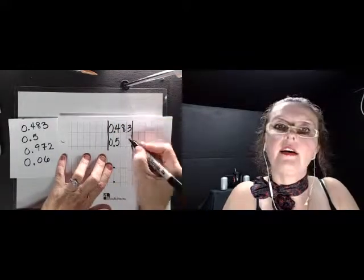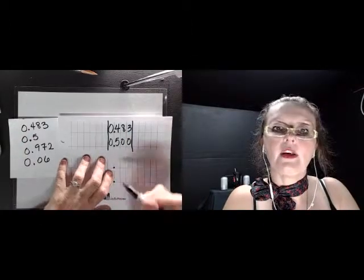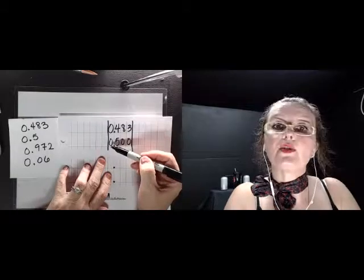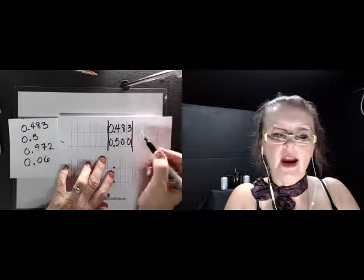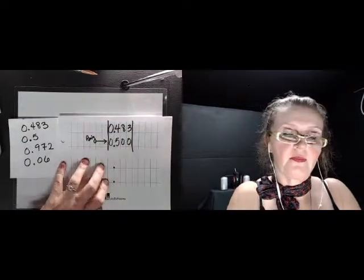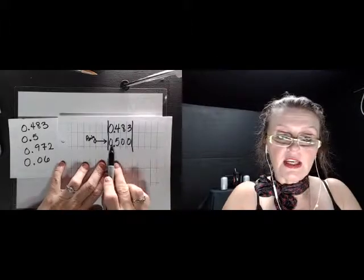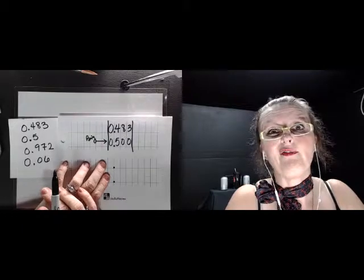Now we look at it and go, the zeros are the same just like the A's are the same in the alphabet. The four and the five, well the five is bigger, so this one is bigger. You can also see now that this is really 500 as compared to 483 as opposed to five.